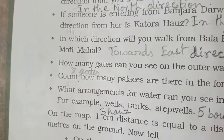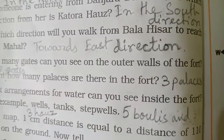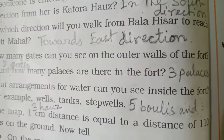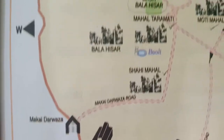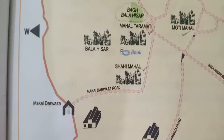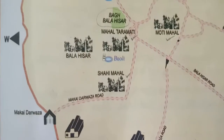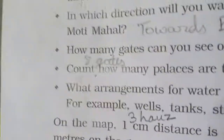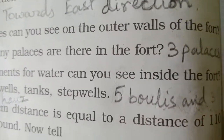Count how many palaces are there in the fort. There is Shahi Mahal, Taramati Mahal, and Moti Mahal. So there are three palaces in the fort.